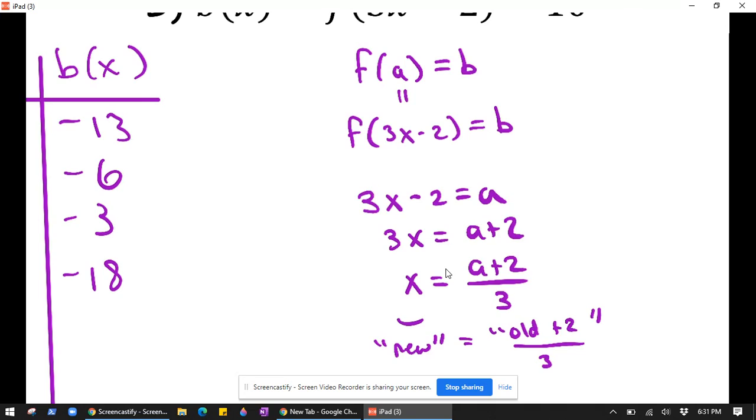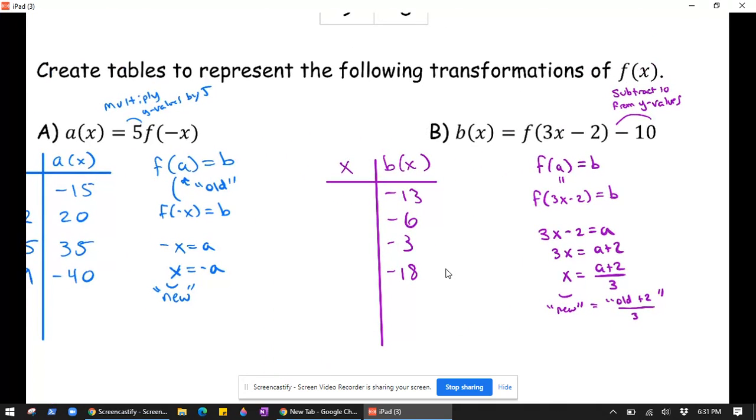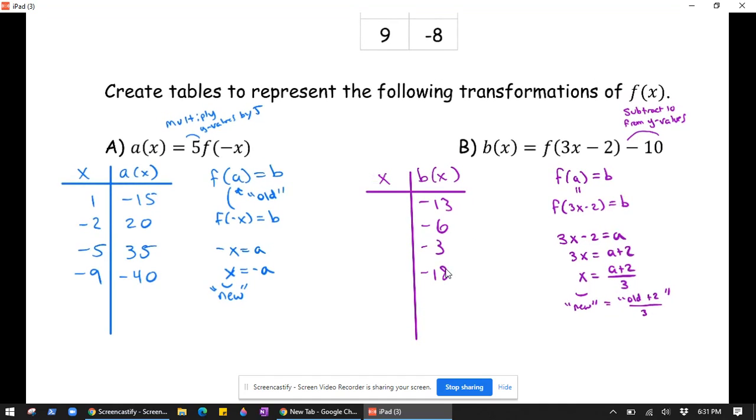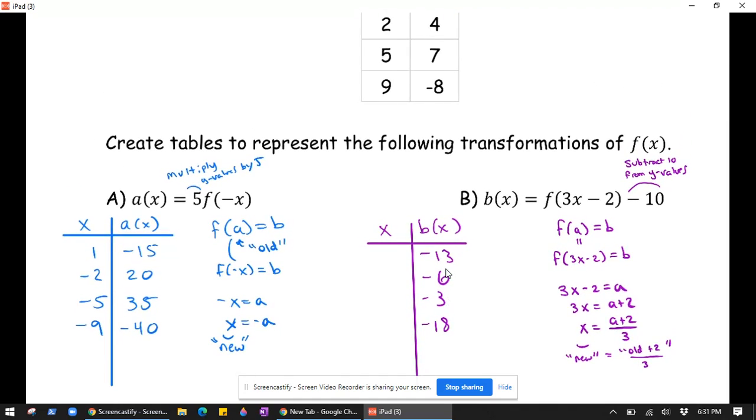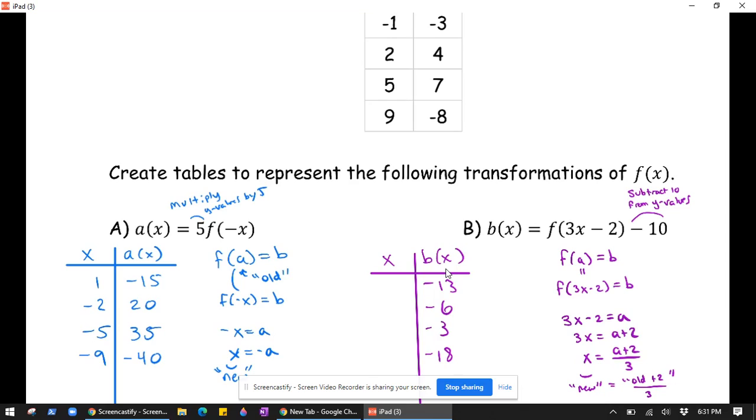So we're going to take our old x values, add 2, and divide by 3. So our old x value negative 1 plus 2 gives you a positive 1, and then we divide by 3 to get a third.